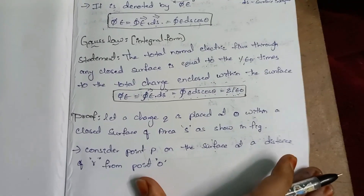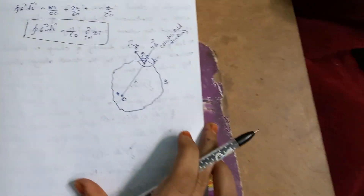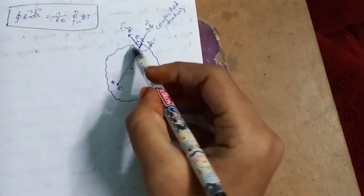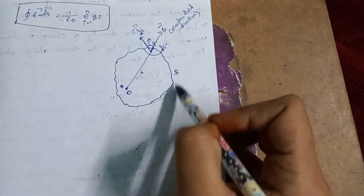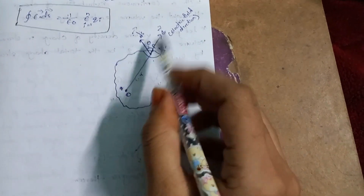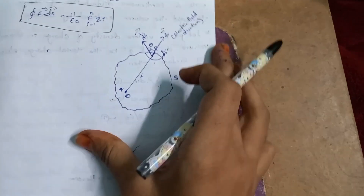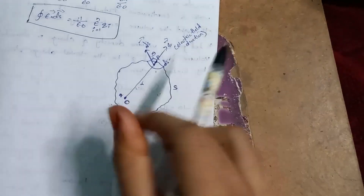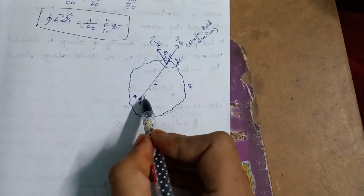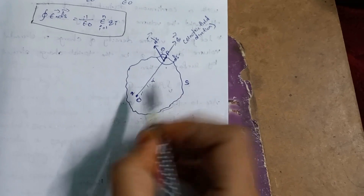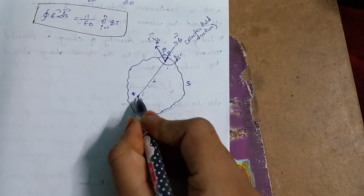Let us discuss the diagram. Here we are going to show the closed surface. We place a charge at the center of this closed surface. We will show a point on the surface.